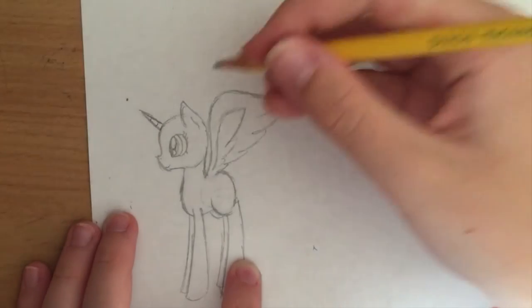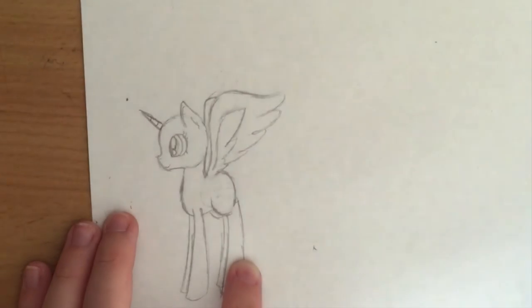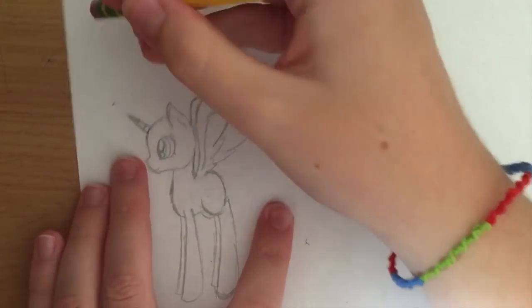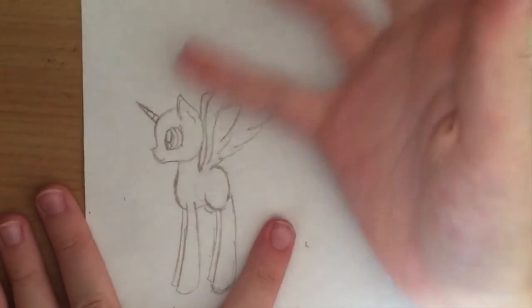Okay, and then I'm going to show you guys how to make the unicorn, if you're drawing a unicorn, appear to be doing magic. So what you want to do is just make squiggles around the horn, just like that. It's very simple.